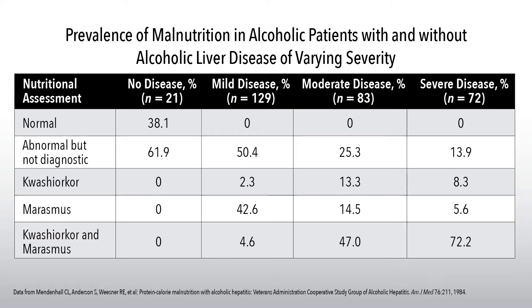Alcoholic patients with and without alcoholic liver disease have varying severity of nutritional deficiencies. You really need to assess patients for sarcopenia — what is their muscle mass? Look at albumin, pre-albumin, and muscle strength. Can they walk? Check for signs of muscle wasting. This nutritional assessment is critical to help improve patient management and survival.